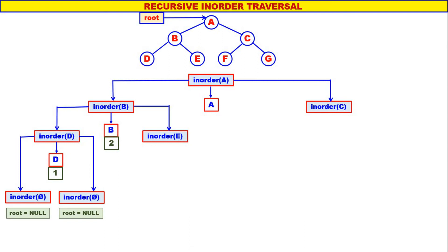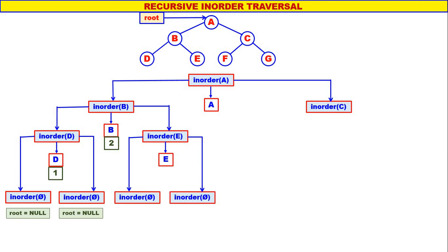Next inorder of E — E is not equal to null. Left child of E is null, therefore inorder of null. E is displayed. Right child of E is null, therefore inorder of null — root is equal to null, nothing happens. E will be the third one to be displayed. Again inorder of null — nothing happens. So inorder of E is over and inorder of B is also over.